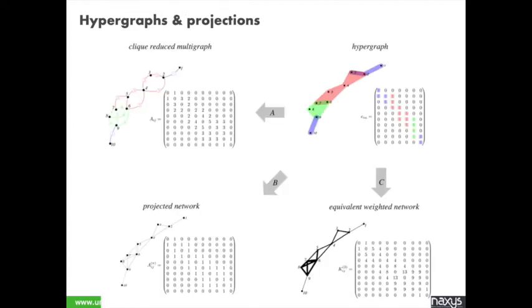To compare this new random walk process with networks, observe that given a hypergraph, you can project it in different ways into networks. You can obtain binary networks, weighted networks, or multigraphs. You can also obtain an equivalent weighted network, projection C, where you can prove that the dynamics on the hypergraph and projected network are orbitally equivalent. In the following, we compare dynamics on hypergraphs with dynamics on projected networks.